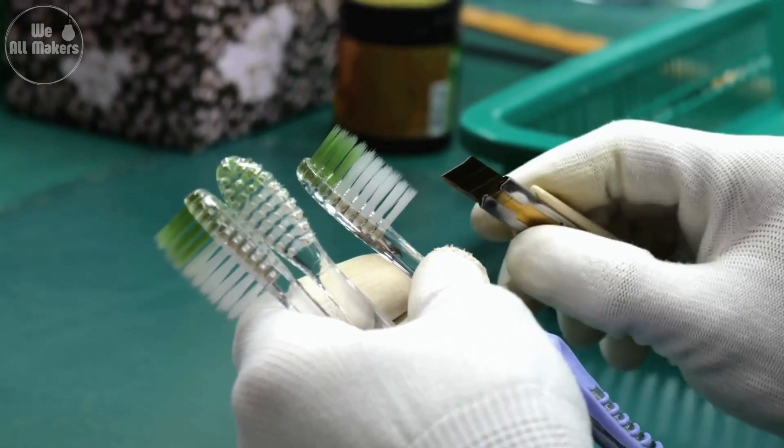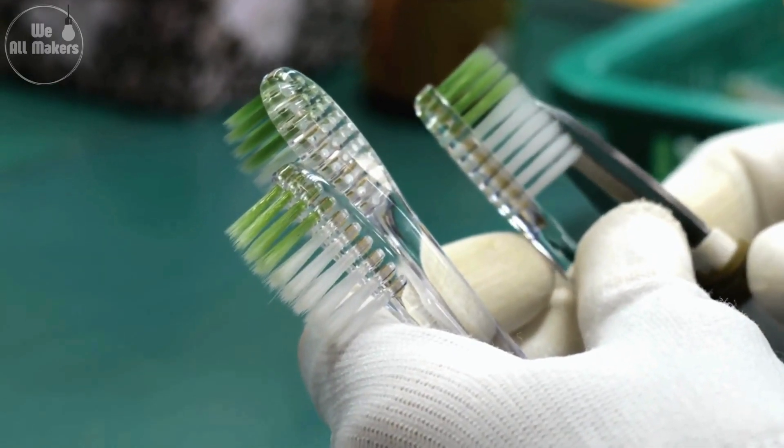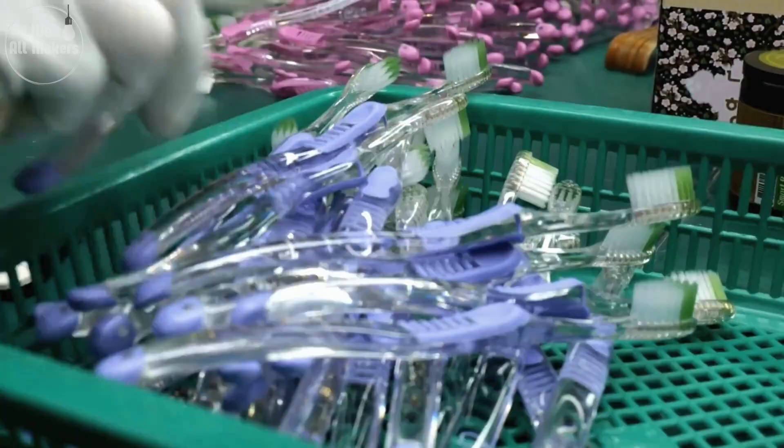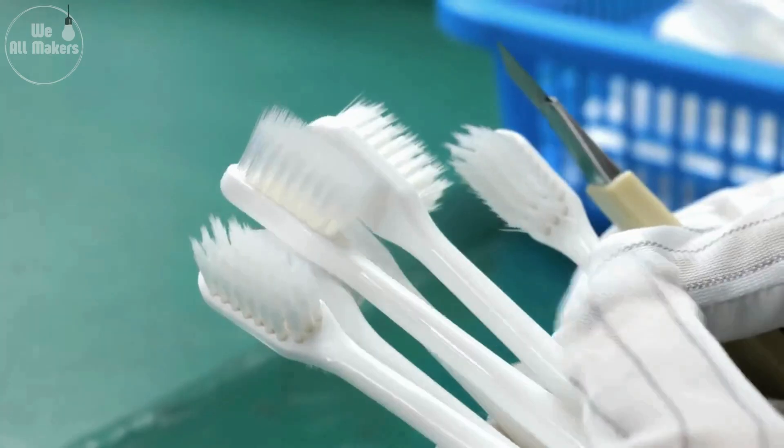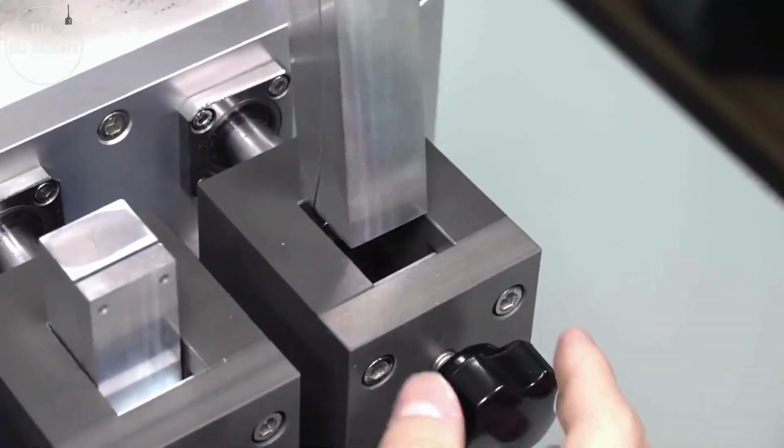And those tongue scrapers on the back? They're not just an afterthought. They're added to help remove bacteria from your tongue, keeping your breath fresh. It's amazing how much thought goes into these little details to make your toothbrush not just functional, but a joy to use every day.